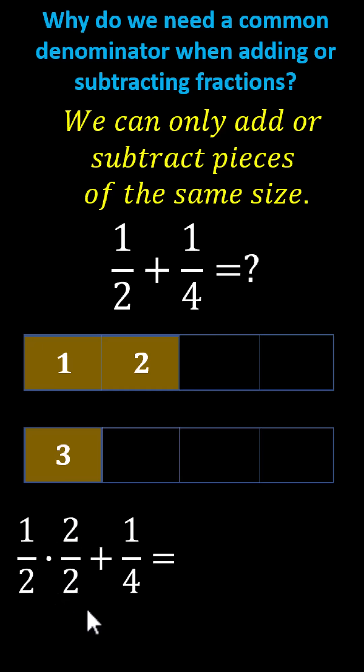This gives us two-fourths plus one-fourth, which equals three-fourths. Notice once we obtain a common denominator, the denominator remains the same, and we add the numerators. I hope you found this helpful.